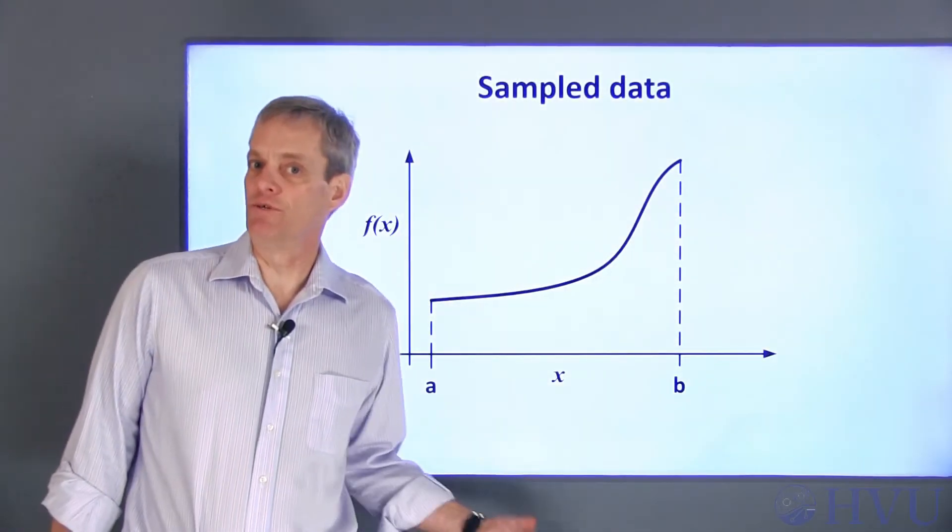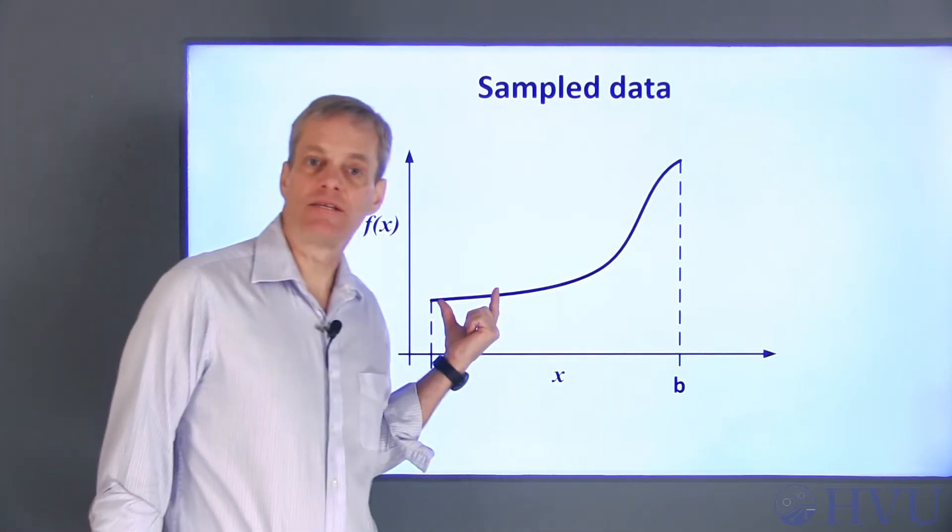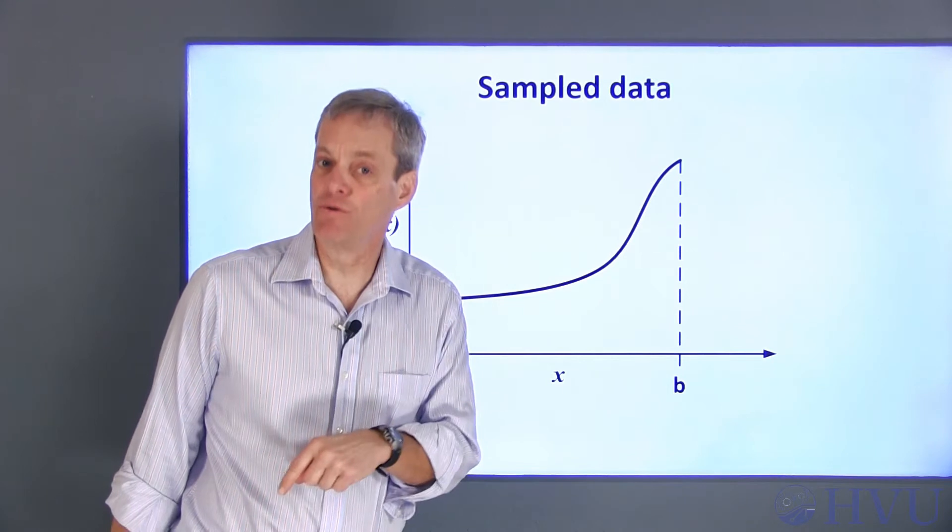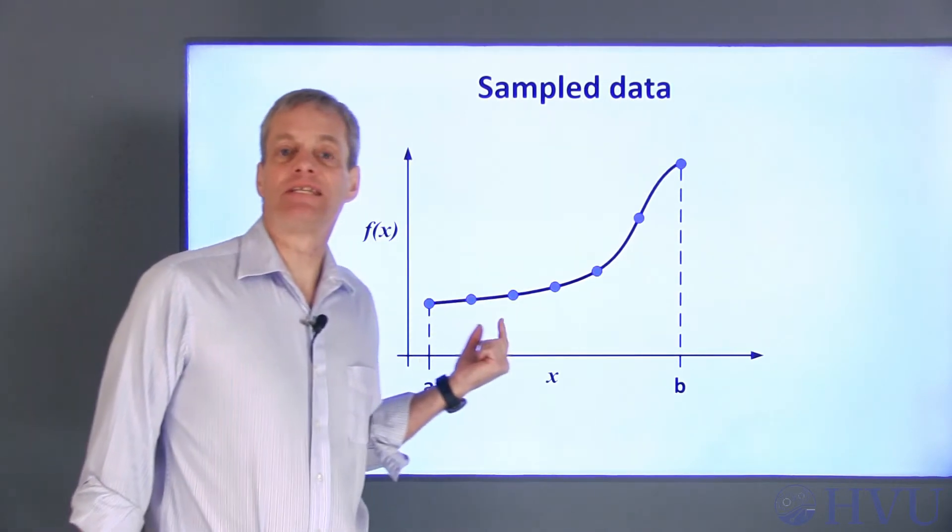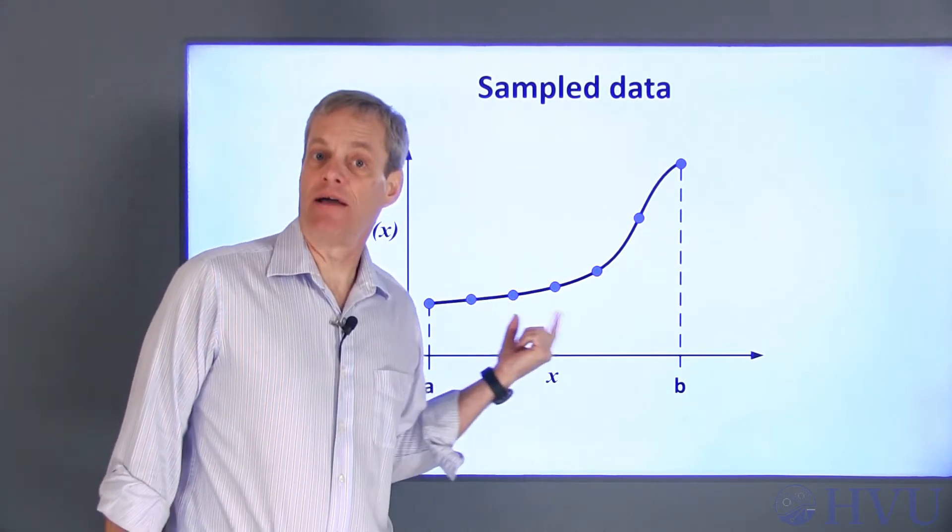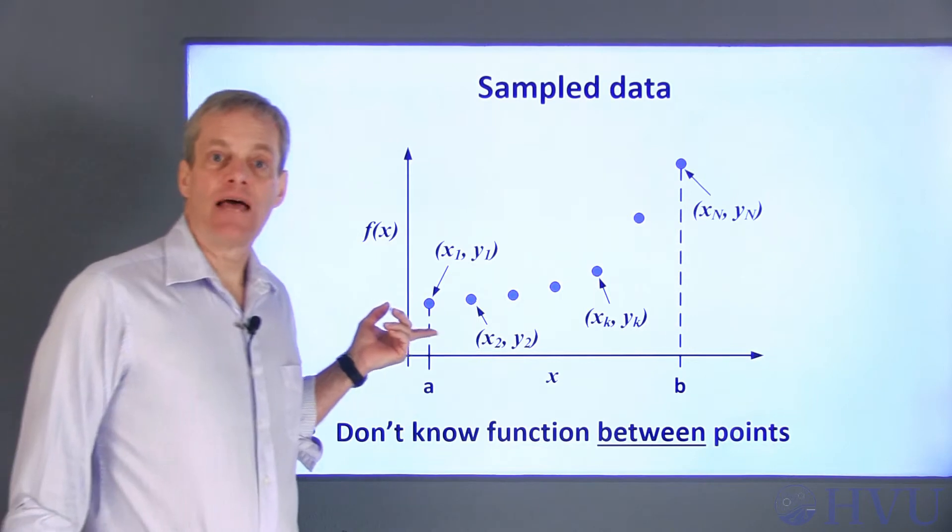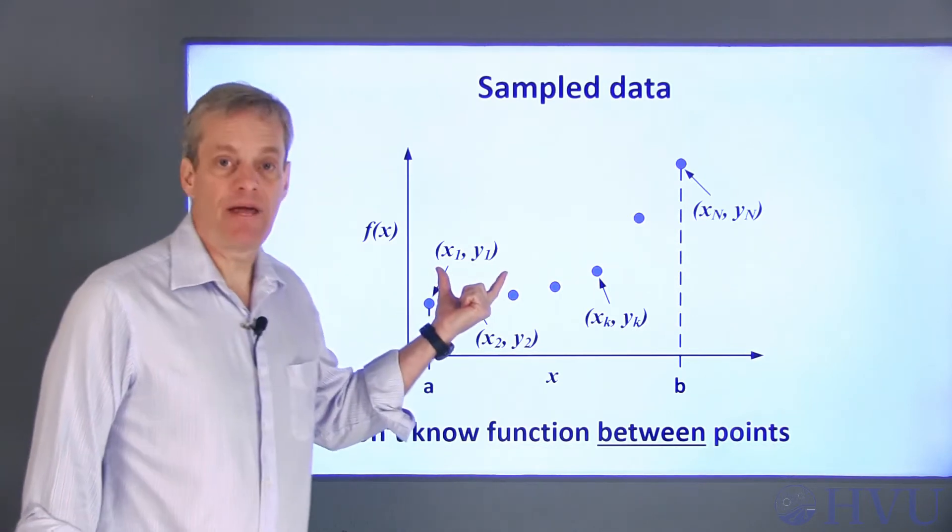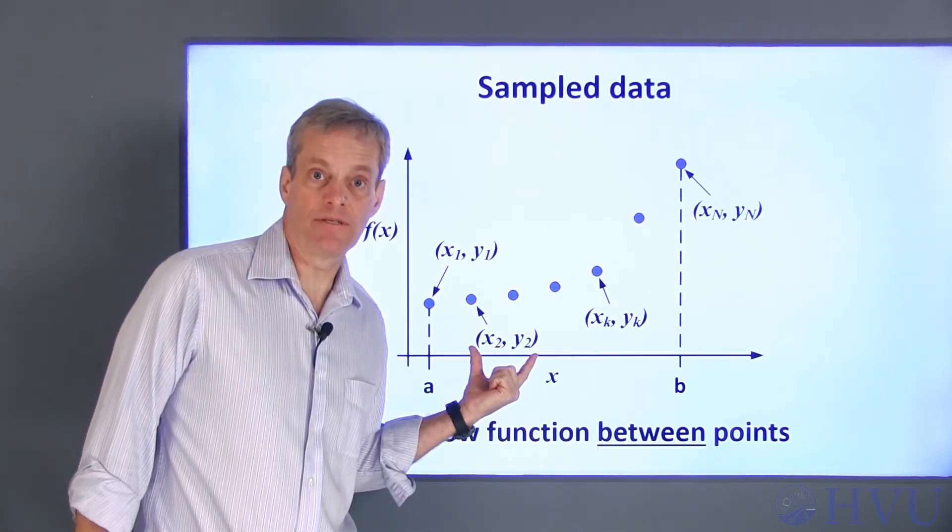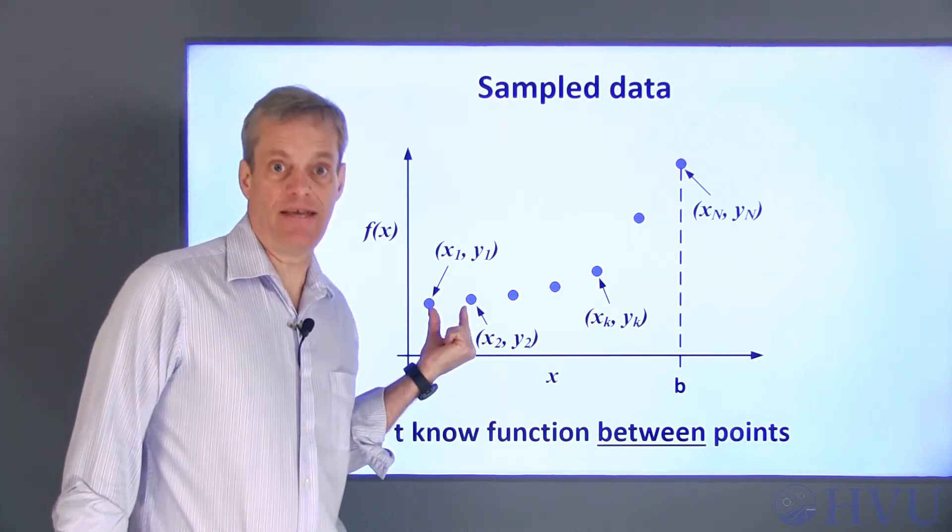The first step we'll do when estimating the areas of the subintervals is to determine the x and y values that define the boundaries of the subintervals. This process is called sampling. It results in a set of discrete data points that lie on the curve describing the function. However, the sampled data only consists of pairs of x and y data points. We no longer know what the function looks like between the data points.